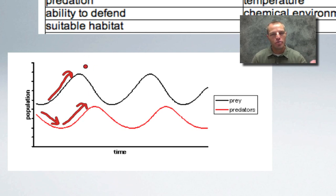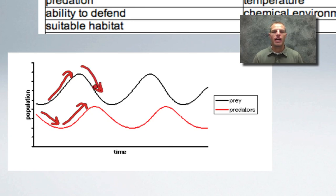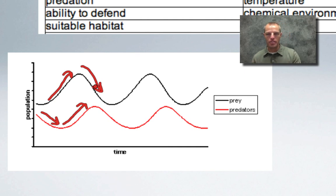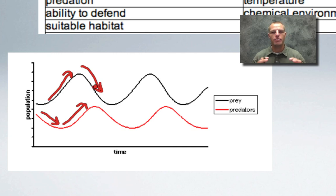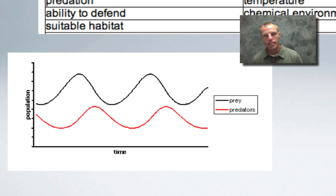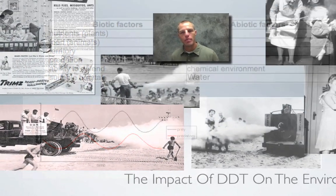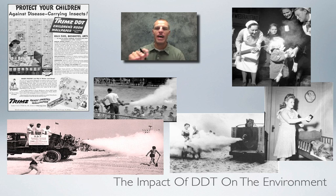Once there are plenty of predators, the prey population declines again. It's a back-and-forth between no environmental resistance and environmental resistance between predator and prey. If biotic or abiotic factors work in your favor you can reach your potential; if not, they become limiting factors or environmental resistance.